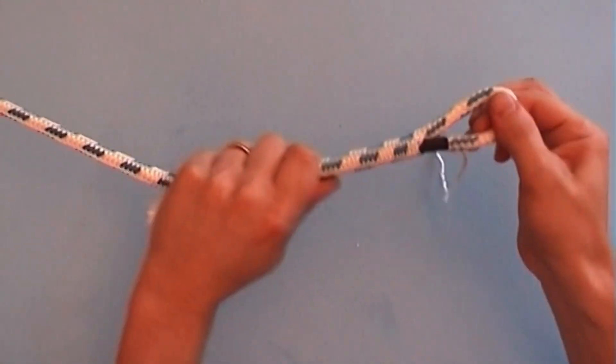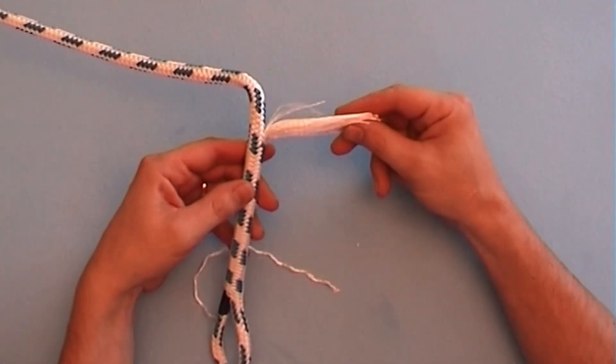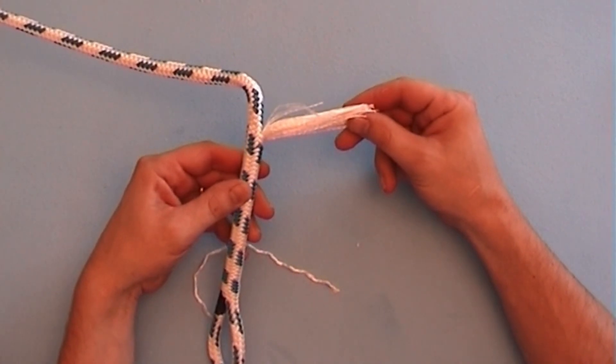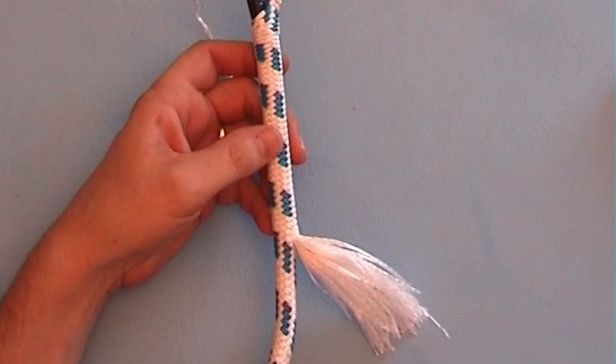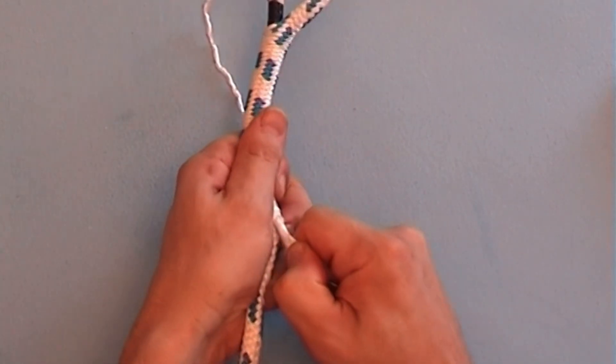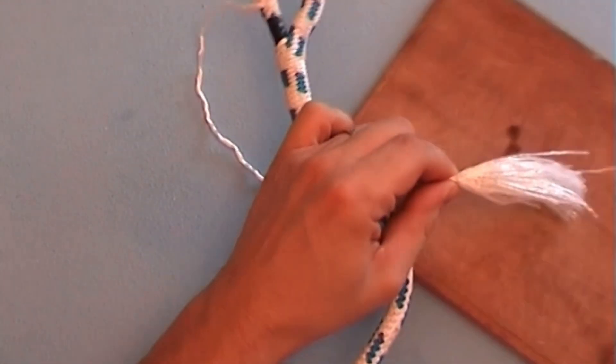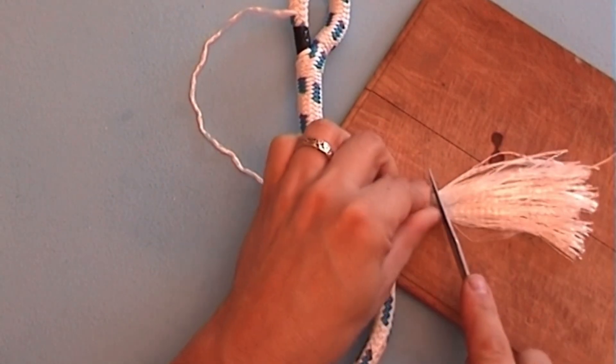When the eye is closed about this far, take care of the core end. Hold the core where it exits and pull it out a little bit. Cut it at the spot where you are holding it, then cut the core once more at an acute angle.